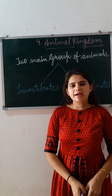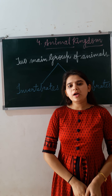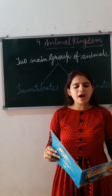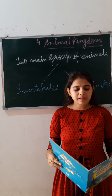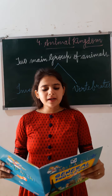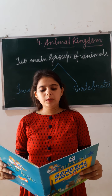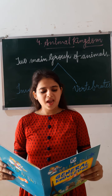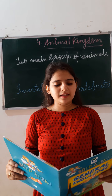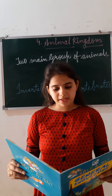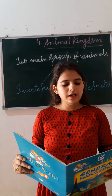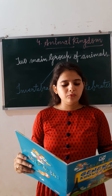Animal kingdom kya hai? All of you take your book and open page number 8, lesson number 4, Animal Kingdom. The animal kingdom contains the most varied living things on earth. Animals have sense organs that tell them about their surroundings. Animals are found everywhere — on land, in water, and in the air.